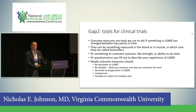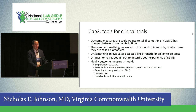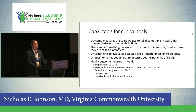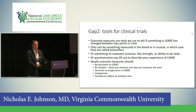That moves on to Gap two: tools for clinical trials. Outcome measures are tools that tell us if something in limb girdle has changed between two points in time. Types include biomarkers measured in blood or muscle, physical assessments like strength or ability to perform tasks by a physical therapist, and patient-reported outcome measures — questionnaires describing your experience of limb girdle. Ideally an outcome measure is pertinent to you, reliable so it doesn't change day-to-day or between sites, and sensitive to progression. We're also interested in feasibility, low cost, and adaptability.